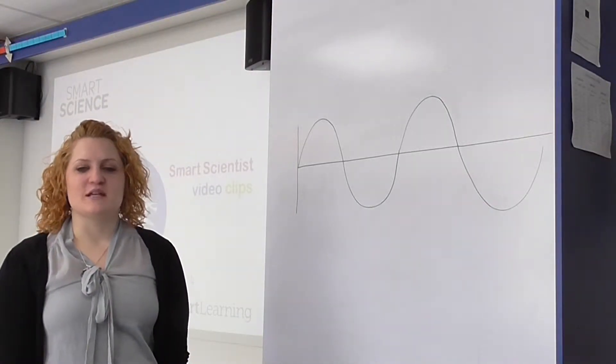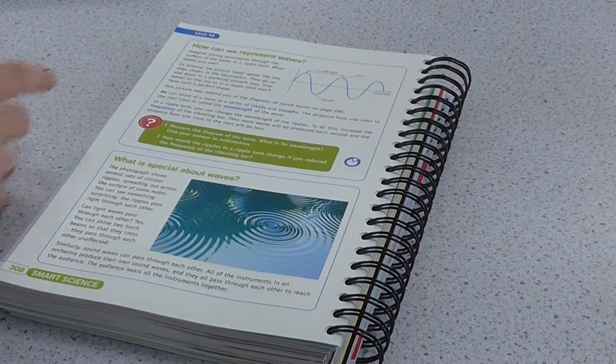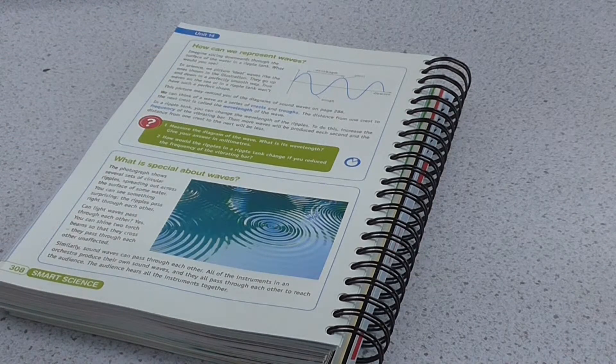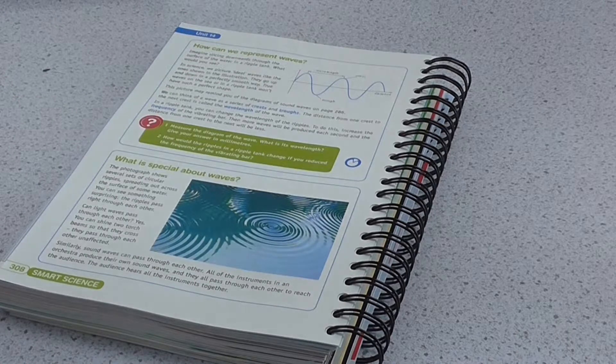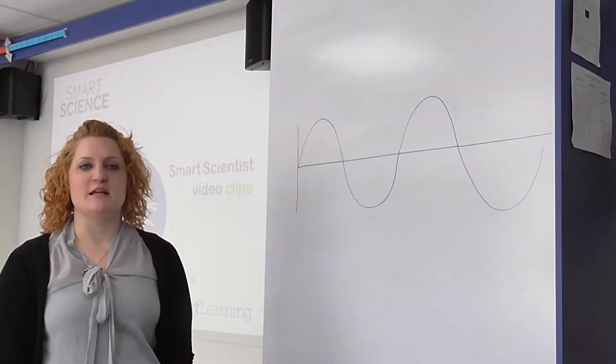One of the things that's come down from key stage 4 to key stage 3 with the new programme of study is being able to compare properties of transverse and longitudinal waves and being able to model them and then being able to label waves as well.